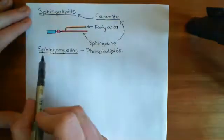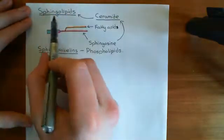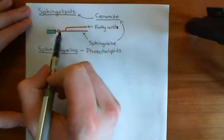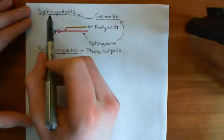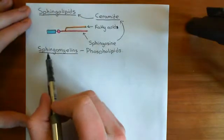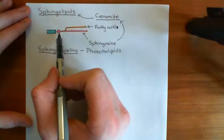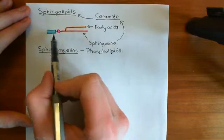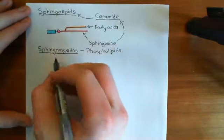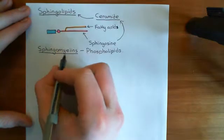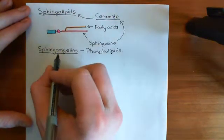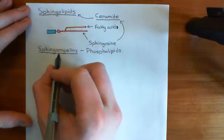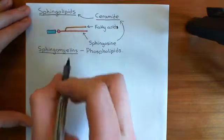Sphingomyelins are just one of the types of sphingolipids. You don't have to attach a phosphate group — for instance, you can attach carbohydrate structures and get different types of sphingolipids that are not sphingomyelins. But when you put a phosphate group and then another group on top of that, such as choline, that's called a sphingomyelin. These are important components of the phospholipid bilayer and are also extremely important in the myelin sheath that surrounds neurons, hence why they are called sphingomyelins.